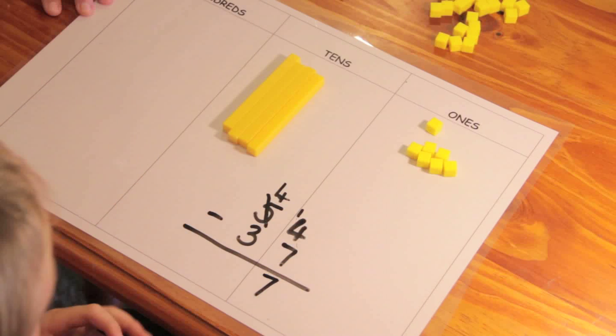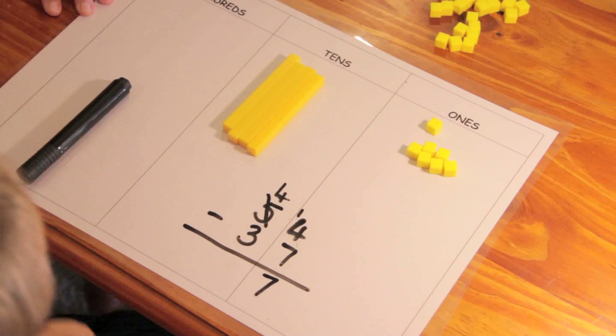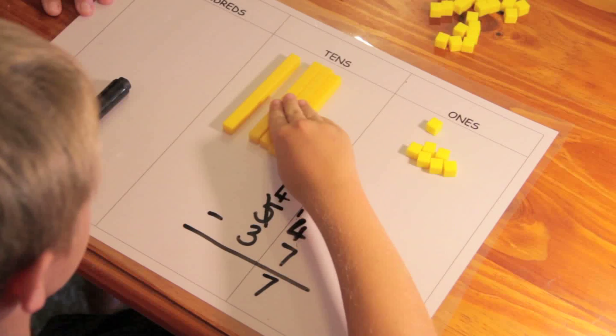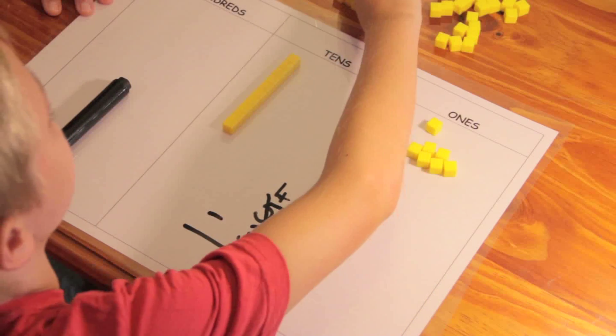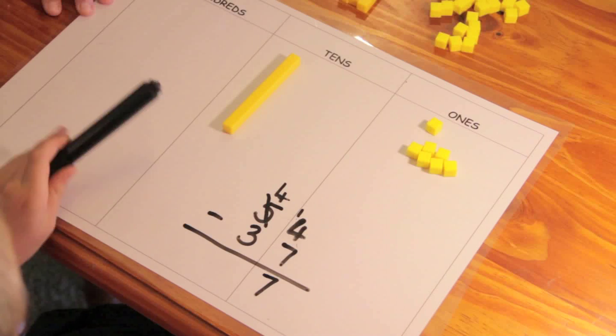And what do we need to do now? Take three from four. Okay, do you want to do that? Okay, how many tens do we have left? Just one. Okay, do you want to record that?